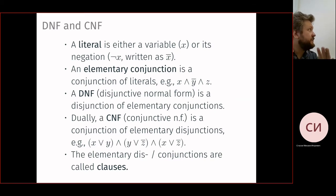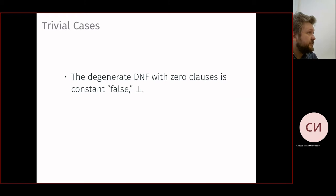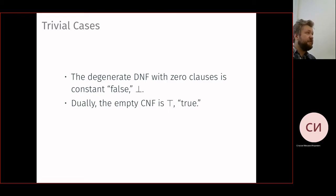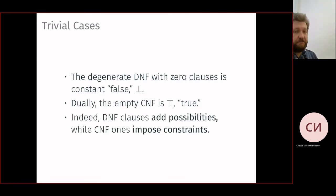For DNF, satisfiability is easy; for CNF, it is a non-trivial problem. Dually, checking tautology for CNF is easy, and for DNF it is hard. An empty DNF is regarded as false (empty disjunction), and an empty CNF is regarded as true (empty conjunction). A DNF clause adds possibilities; a CNF clause imposes constraints. The longer the CNF, the harder it is to satisfy.